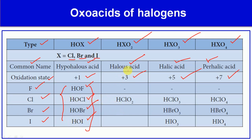The halous acid is formed by chlorine only. That is HClO2, chlorous acid. In chlorous acid, the oxidation state of chlorine is +3.